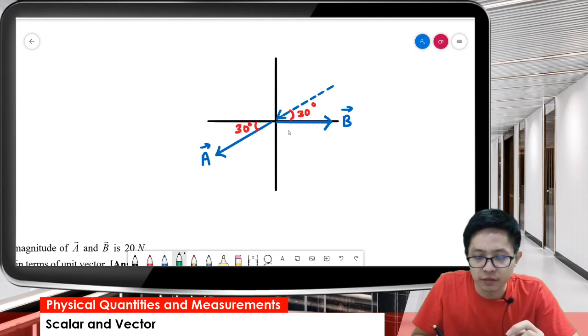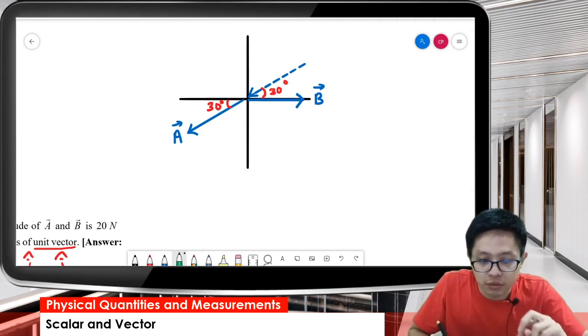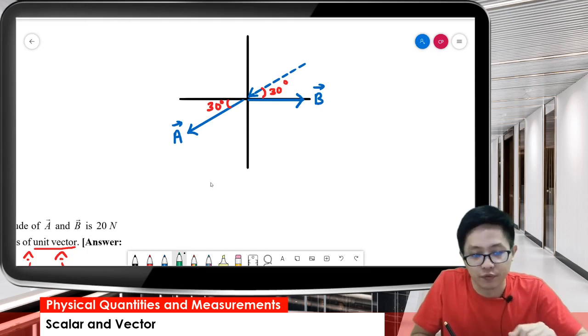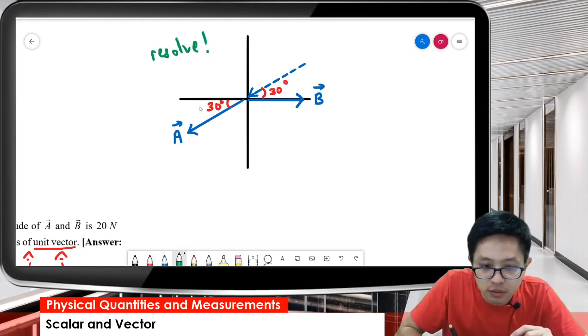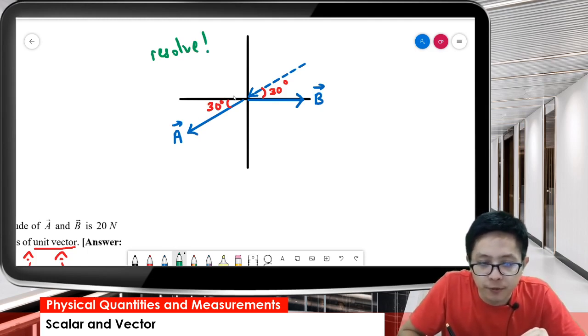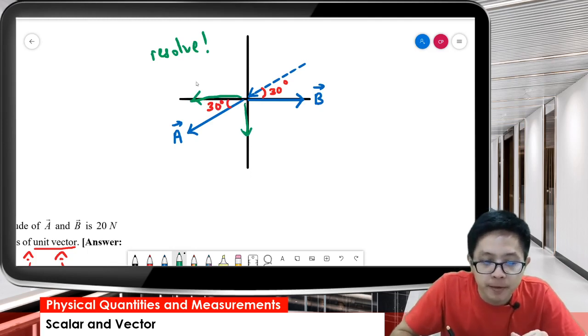Then you can solve and find the resultant vector. Before we find the resultant, we need to resolve the vector. Resolve means break into component x and y first. Vector A going this way has two components, x and y.